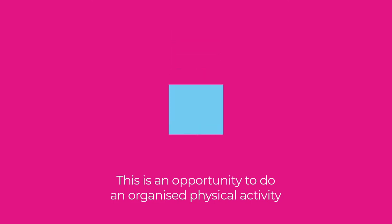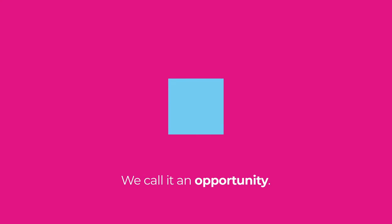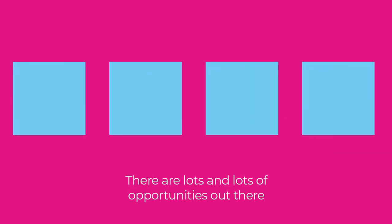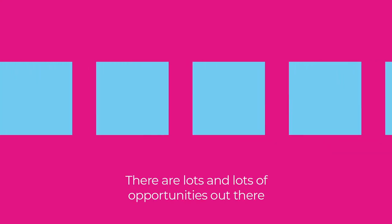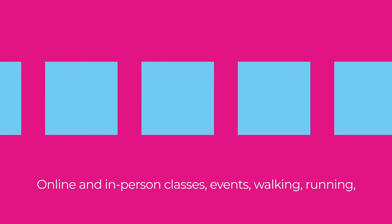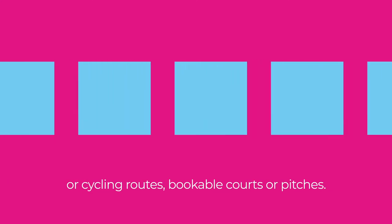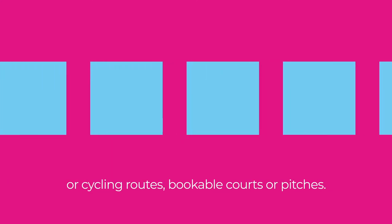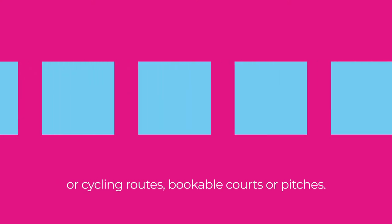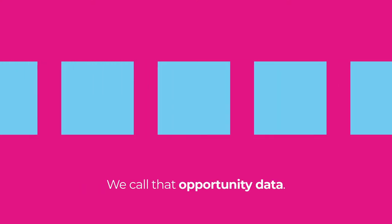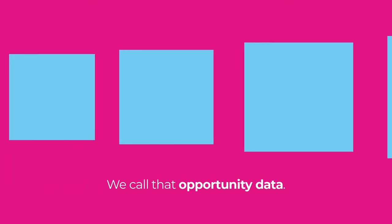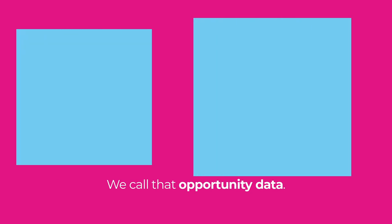This is an opportunity for someone to do an organised physical activity — we call it an opportunity. There are lots and lots of these opportunities out there: online and in-person classes, events, walking, running or cycling routes, bookable courts or pitches. Whatever form they take, we call the information about them opportunity data.